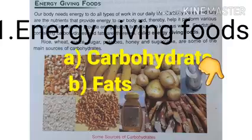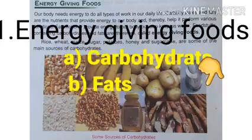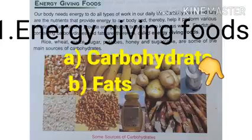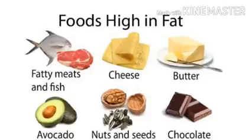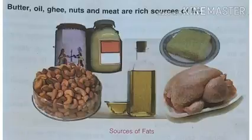Sources of carbohydrates include rice, wheat, maize, sugar, potatoes, honey, and sugarcane. Sources of fats include ghee, oily substances, fatty meats, fish, avocado, cheese, butter, nuts, seeds, and chocolates. One gram of carbohydrates gives about four kilocalories of energy, while one gram of fat gives about nine kilocalories of energy. So fats provide more calories than carbohydrates.